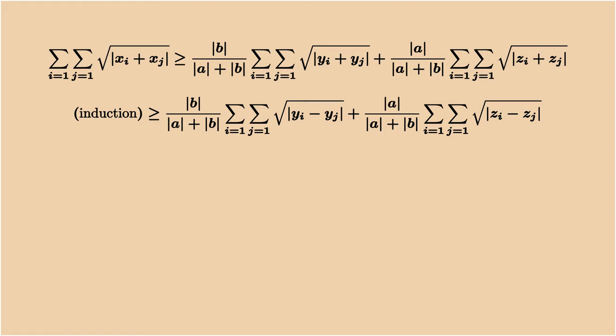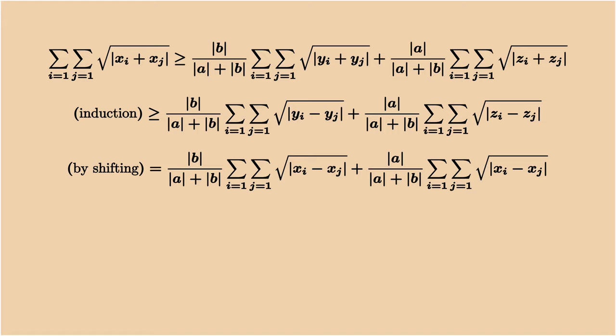Hence, they are larger than the sum of yi minus yj and the sum of zi minus zj. Finally, these two terms are identical to xi minus xj, and we are done.